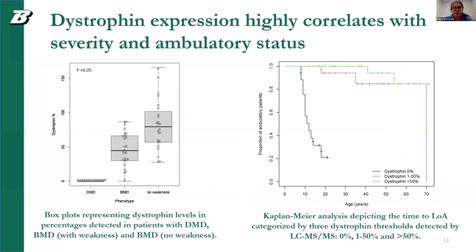This data has yet to be published, but one of the key things we saw is that dystrophin expression highly correlates with severity and ambulatory status. In the first graph, box plots represent dystrophin levels as percentages detected in patients with DMD where no dystrophin is identified, patients with BMD that exhibit weakness, and patients with BMD that exhibit no weakness. There is a clear significant difference between BMD patients with and without weakness. This is also reflected in a second plot showing the proportion of ambulatory patients. Patients with less than 50% of normal dystrophin expression show loss of ambulation around age 20 to 30, whereas patients with over 50% dystrophin expression do not start losing ambulation until age 40.